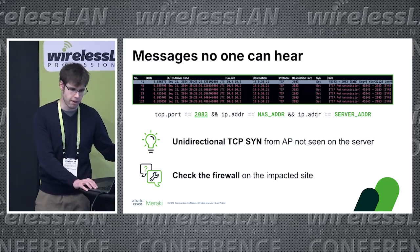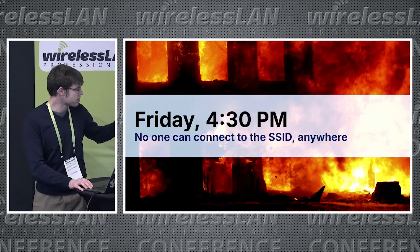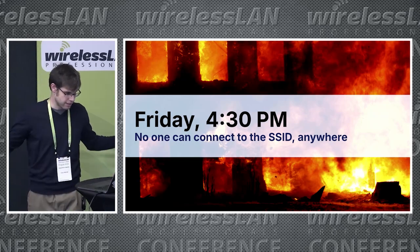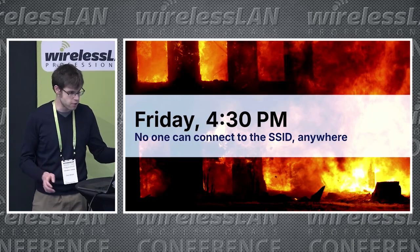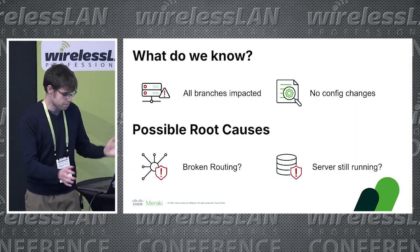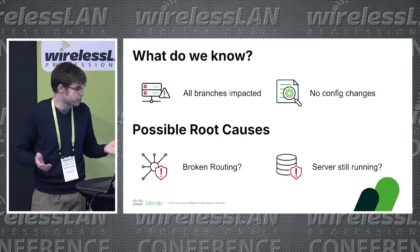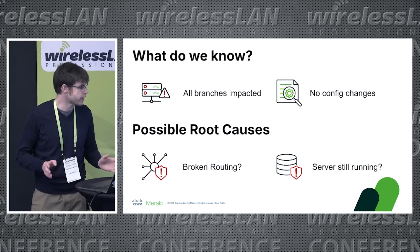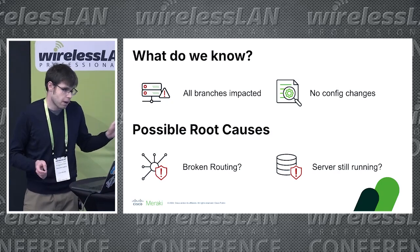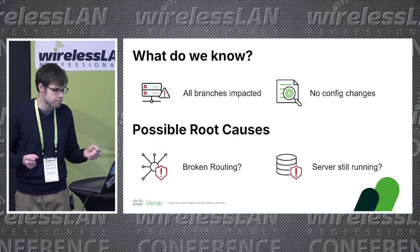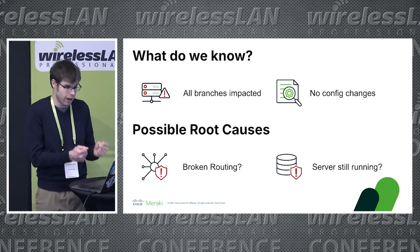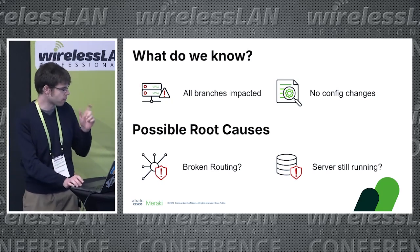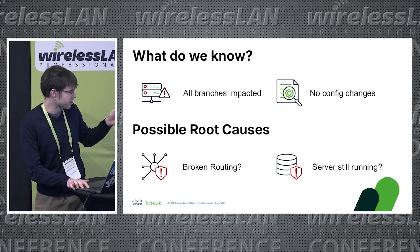Everything goes well for a few months until this happens on a Friday afternoon, just before we wanted to disconnect. No one can connect anywhere in the network — no site works. We check the change log and there were no configuration changes in the past couple of weeks. Since all branches are impacted, this must be something big, related either to the routing or to the RadSec server itself. This time we troubleshoot from a different angle, starting from the server.